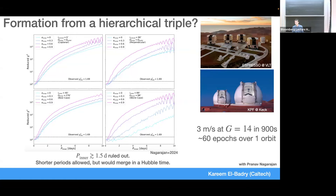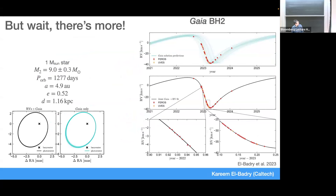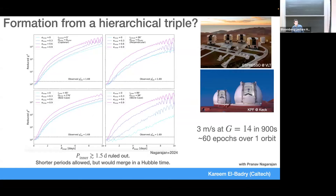Audience question about how BH1 formed and whether an outer tertiary could help explain the formation. Response: It's not easy because the inner orbit isn't tight enough to have been captured in a fly-by scenario. There may be some other channel. It's possible the triple merged into a single black hole, but a merger normally gives a kick, which might explain the eccentricity. The typical post-merger kick velocity can be a few hundred km/s, so it might work. We don't know how it formed — so let's move on to the second system, Gaia BH2.